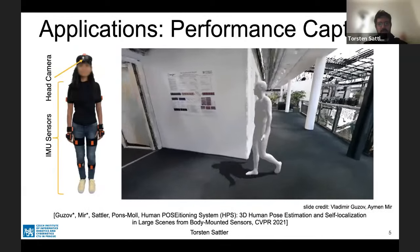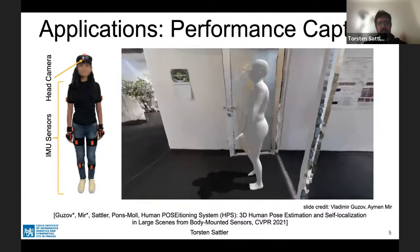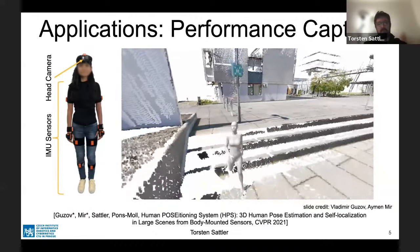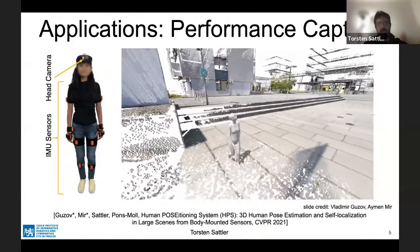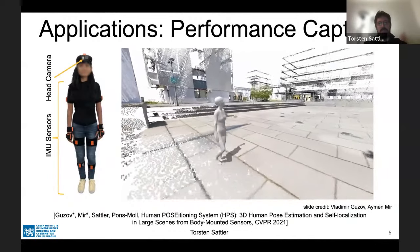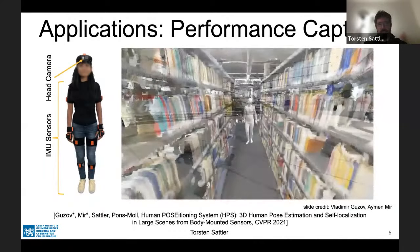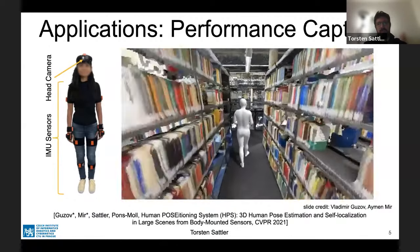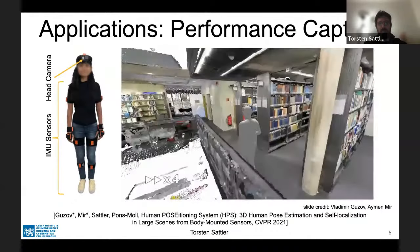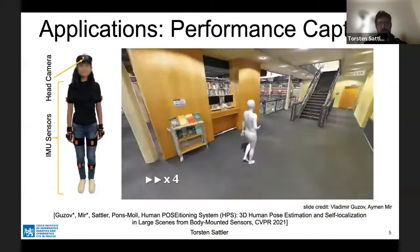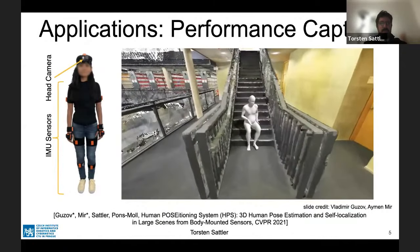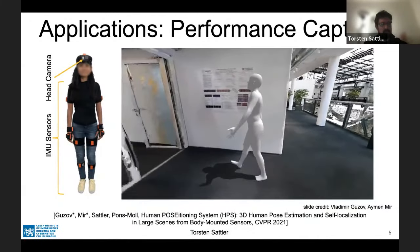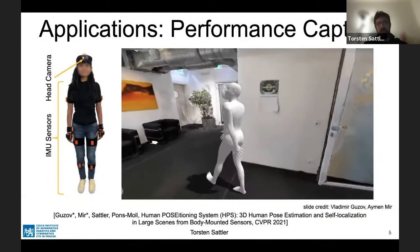A different application is performance capture. This is recent work presented at CVPR this year. The first authors are Vladimir Gudsov and Ayman Muir. The idea is we would like to estimate the pose of a human in a larger scene. Rather than using external cameras — which for scenes like libraries with lots of empty space would require many calibrated cameras — we have the 3D model of the scene, a head-mounted camera to figure out where the human is, and body-mounted IMU sensors to estimate the human body pose. Results are computed just from ego-mounted sensors without any external cameras.